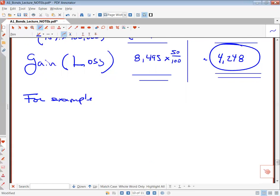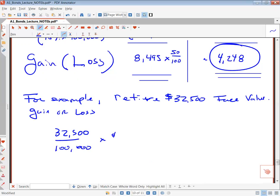So say, for example, you have, you retire $32,500 of face value. What's the gain or loss? All you have to do is take $32,500 over $100,000 times $8,495. So $32,500 divided by $100,000 times $8,495 looks like $2,761. I'll put my math right there. Living life on the edge, $2,761.